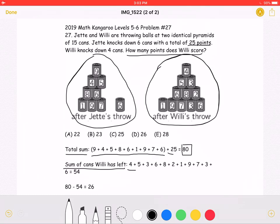we will get 4 plus 5 plus 5 plus 3 plus 6 plus 8 plus 2 plus 1 plus 9 plus 7 plus 3 plus 6, which is a total of 54.